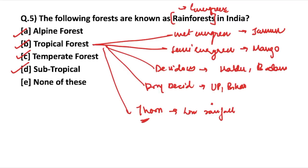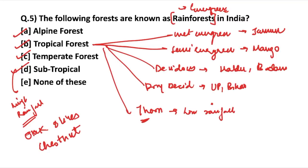Subtropical forests are found in high rainfall areas, basically on the slopes of mountains where we cannot differentiate between winter and summer seasons. Famous examples are oak, olives, and chestnut. Temperate forests are found in the peninsular plateaus and eastern Himalayan regions — in areas like Sikkim, Himachal Pradesh, and UP. Maple and Deodar are very famous examples of temperate forest. In terms of quantity: tropical forests are the most, then subtropical, then temperate, and then alpine.